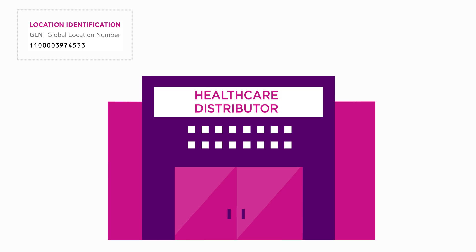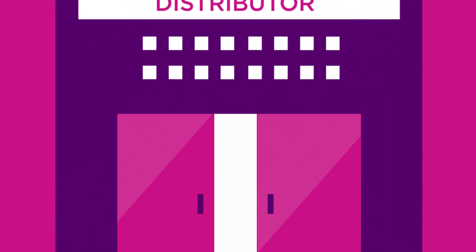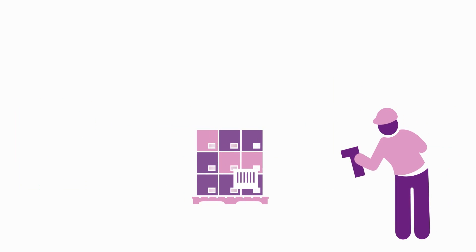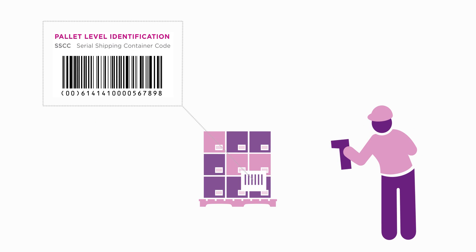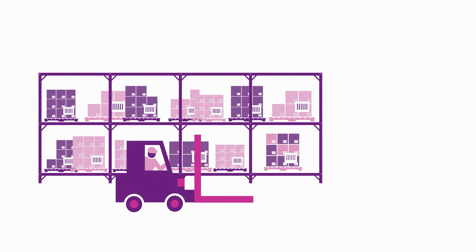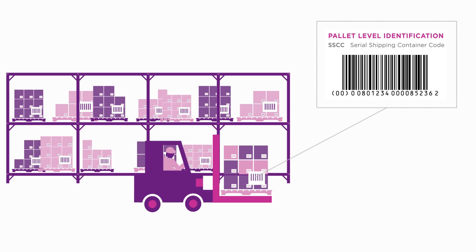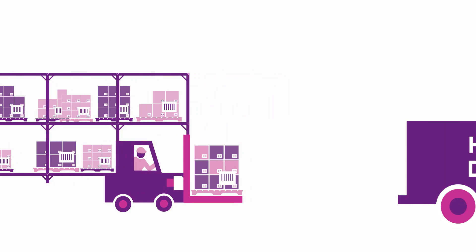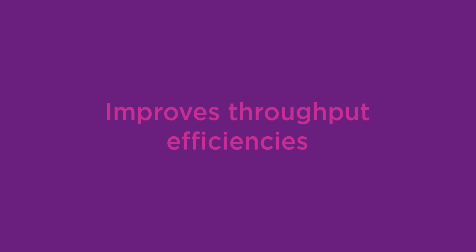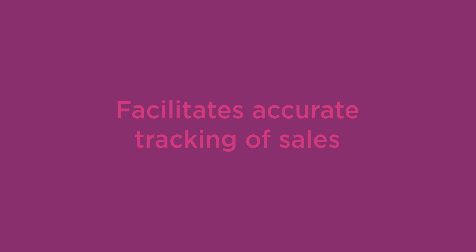At the healthcare distributor, SSCCs are created for each pallet shipped and used to track shipping units. GTINs are used to put products into inventory, rotate inventory for quality control processes, and to ensure accuracy of picked products. Entity location data is shared through the GLN registry for healthcare, and product data is shared through the GDSN. EDI processes are synchronized with GLNs and GTINs, which improves throughput efficiencies and facilitates accurate tracking of sales.